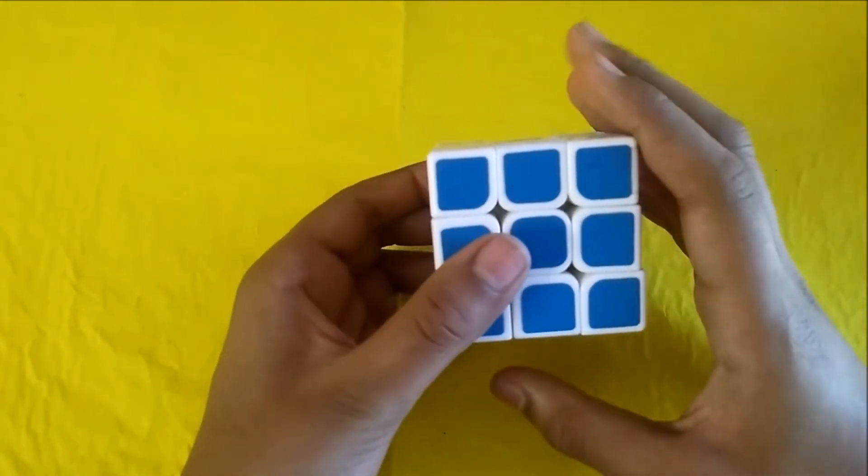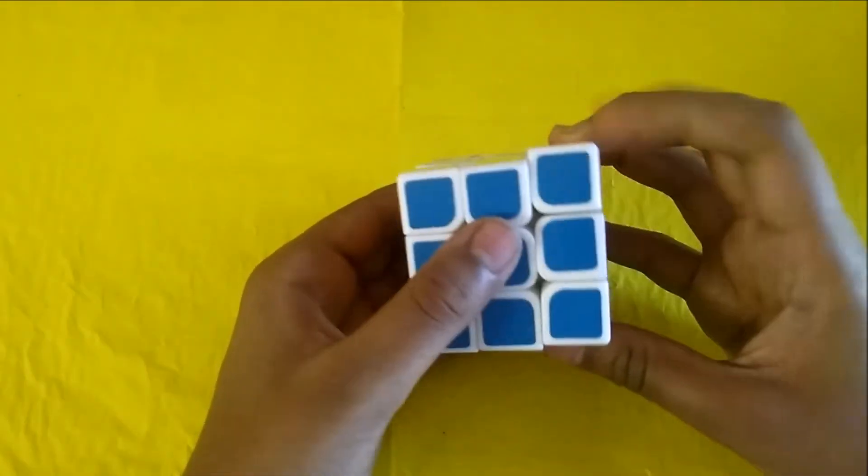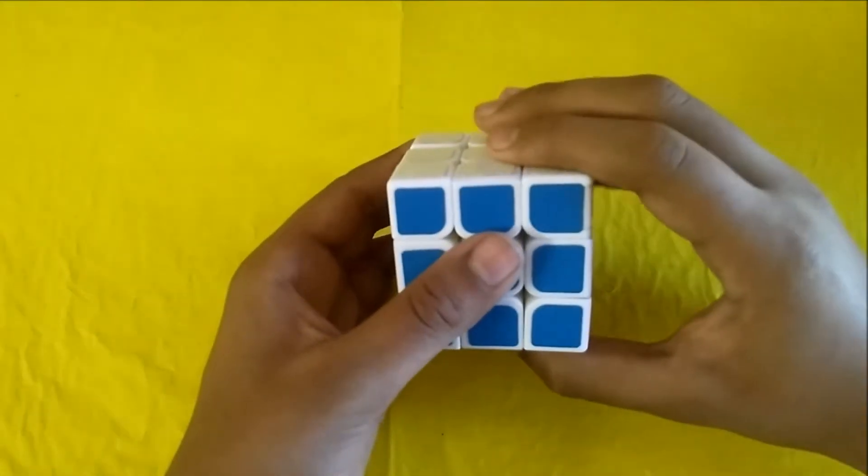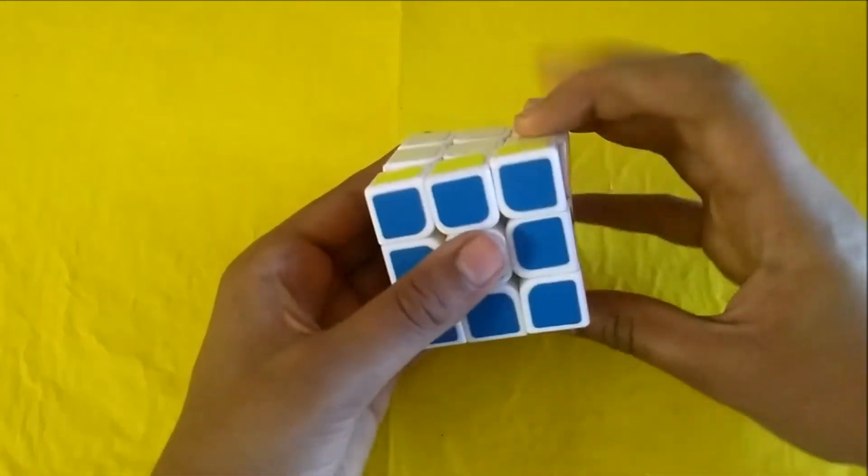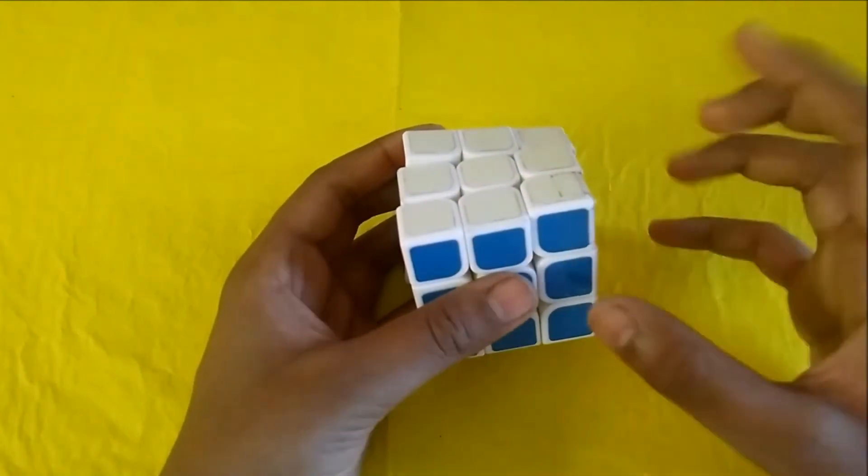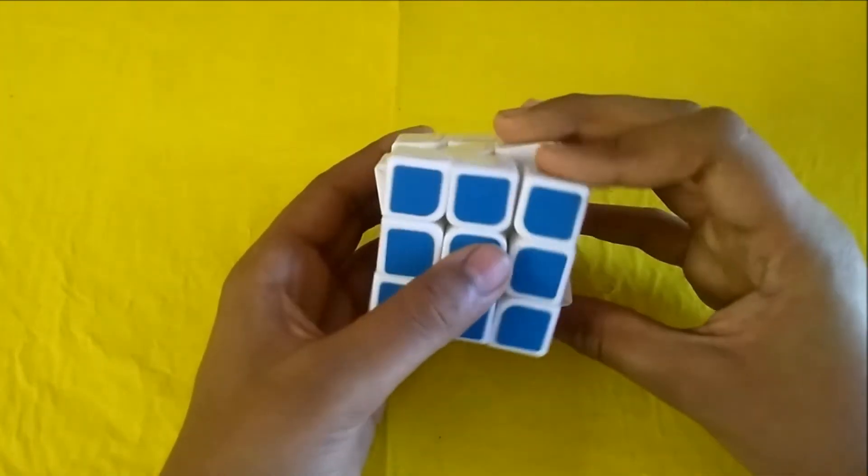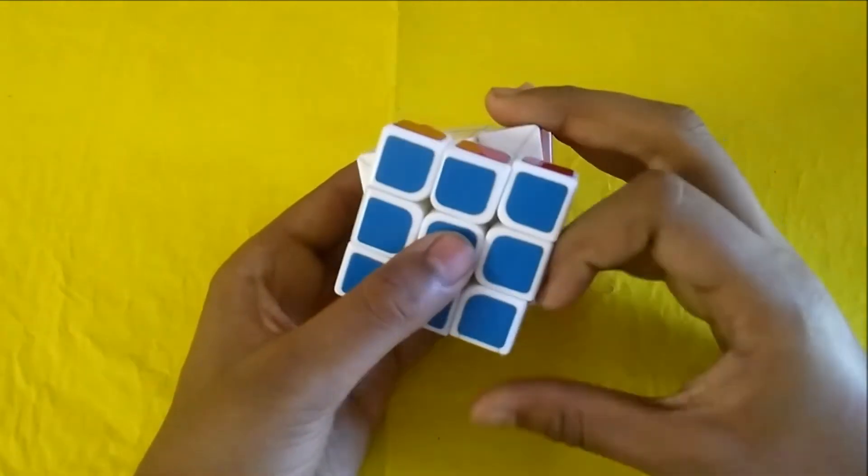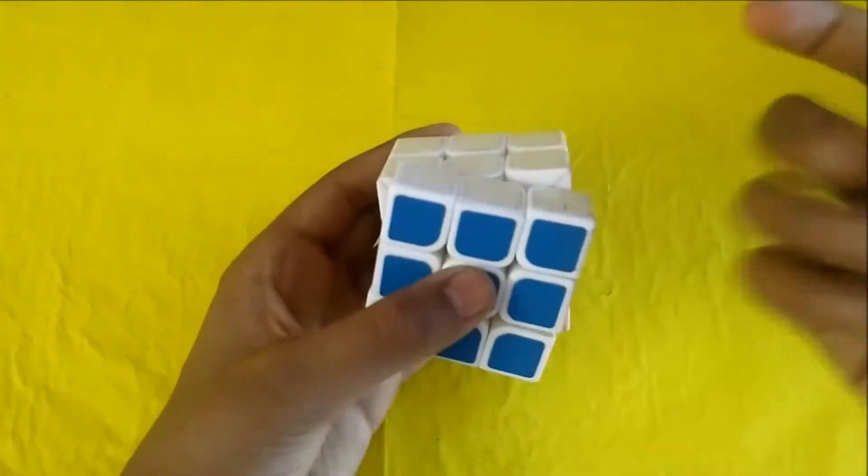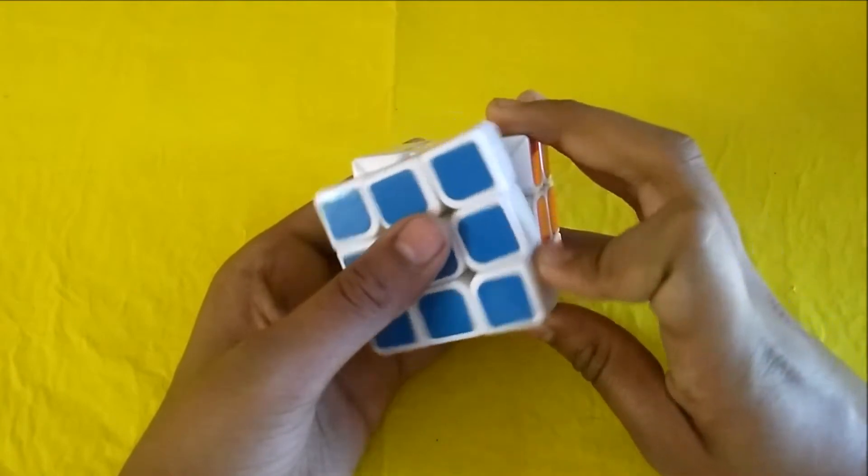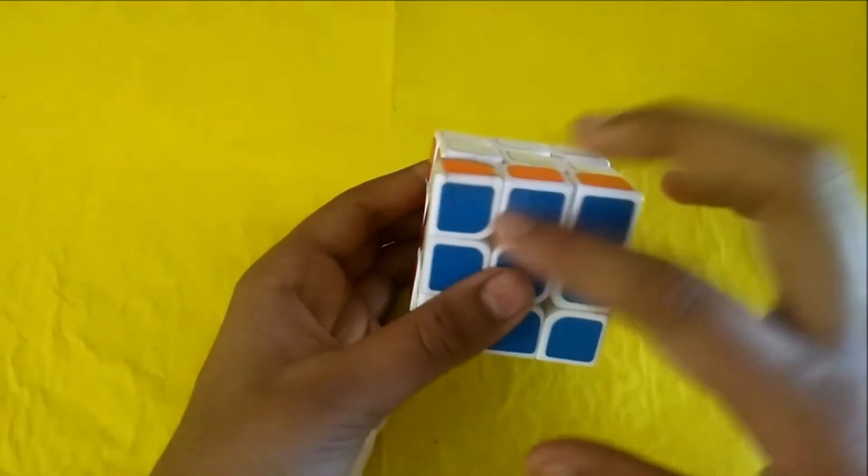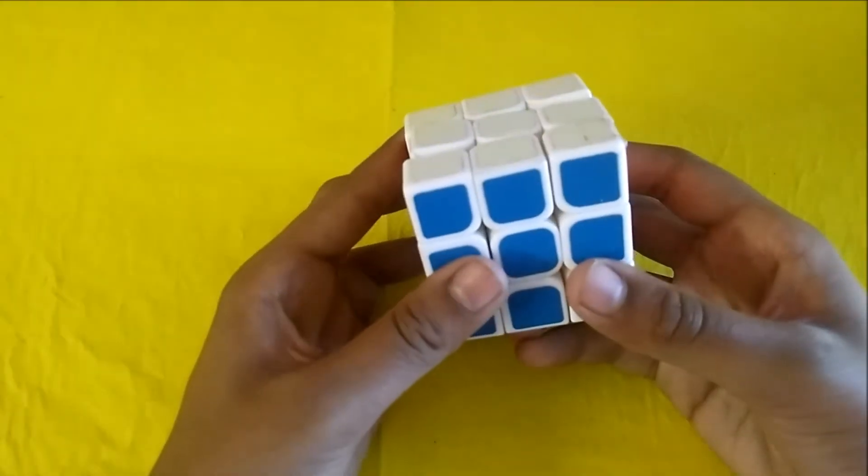Now the most confusing is the front layer. Many cubists, almost most of the cubists, confuse in this. In F, this is the front layer. If I say only F, you are going to move it clockwise like this. If I say F prime, you are going to do like this. I am telling you again: if only F, then clockwise. If F prime, you are going to do like this anti-clockwise.